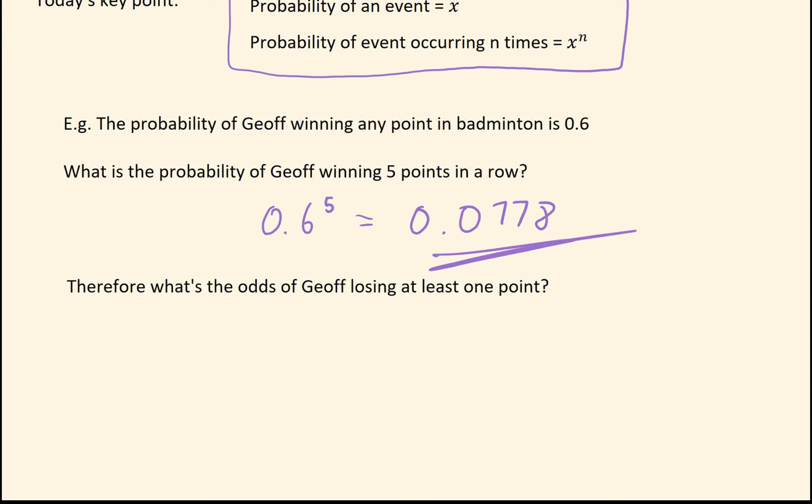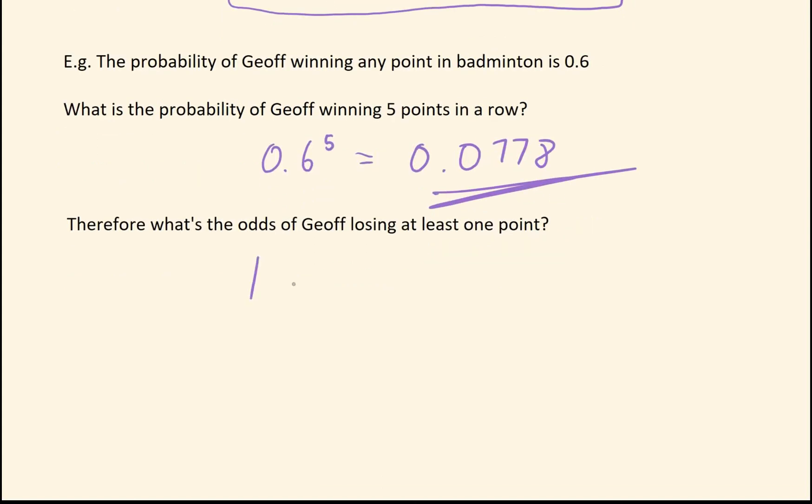If he doesn't win five points in a row, then it means he must have lost at least one point. And there's no way he can lose at least one point and also win five points in a row. That means we can use the fact that probabilities add up to one, so the odds of him losing at least one point is going to be one minus this. This trick only works if they're perfect opposites.